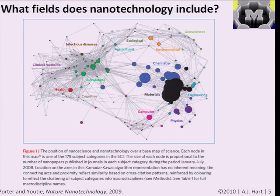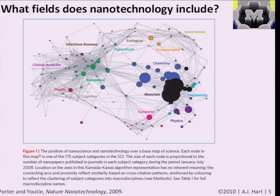We can ask ourselves what fields nanotechnology includes and impacts, because things are getting more interdisciplinary. An interesting study published just a couple months ago looked at what fields related to nanotechnology publications are connected to. You can see that a lot of nanotechnology research is related to materials and chemistry, but you also see fields you might have thought were far off — physics, computers, biomedical, medicine, ecology, and the environment.